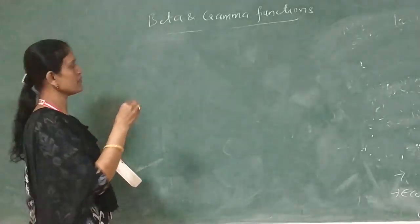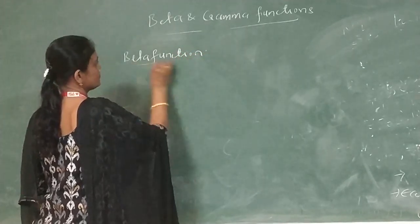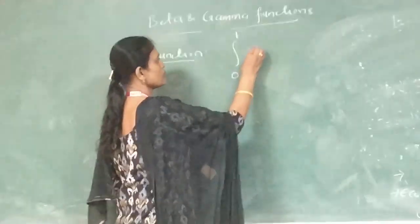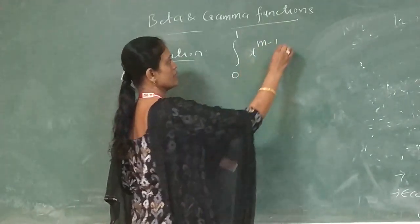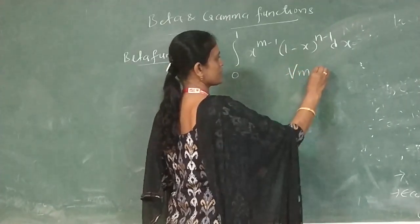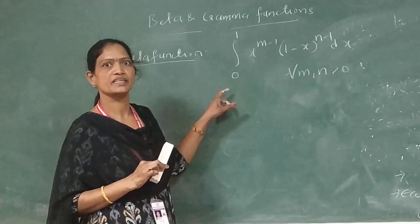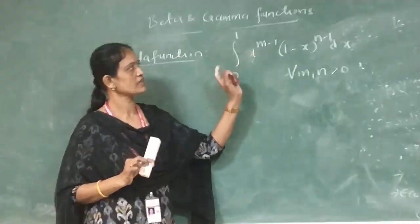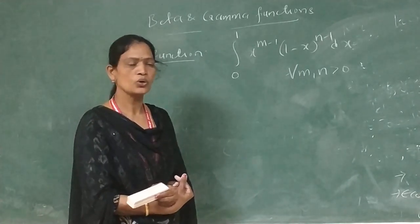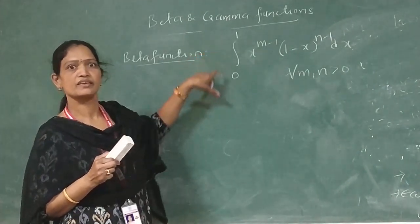First, the definition of beta function. The definite integral from 0 to 1, x to the power of m minus 1, into 1 minus x to the power of n minus 1 dx, for all m, n greater than 0, is called the beta function. Here, it is a definite integral meaning we have the integral from 0 to 1.